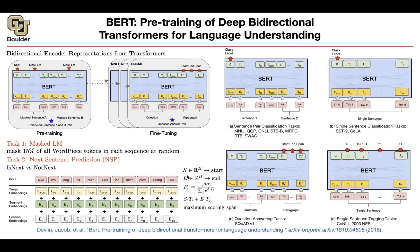There is another question: are the position embeddings also learnable? Yes. These position embeddings could be learnable, or they could be those Fourier features — the sine and cosine functions — that we covered in the 'Attention is All You Need' paper. That's a choice you make. They could be learnable or fixed, and they are going to give you equivalent results.